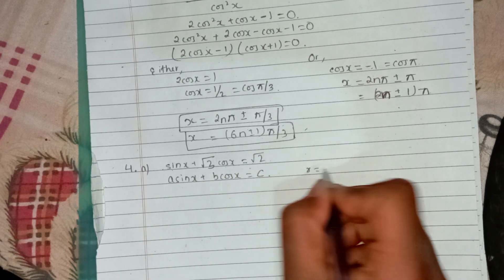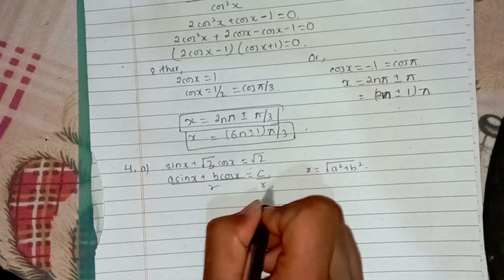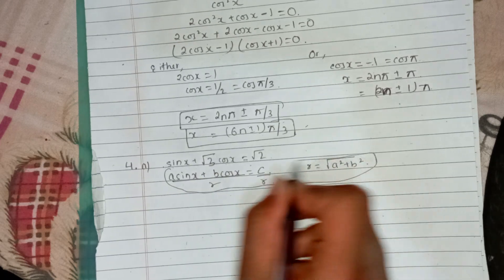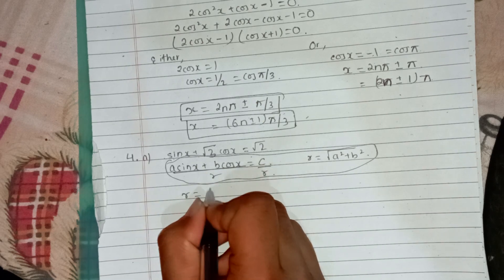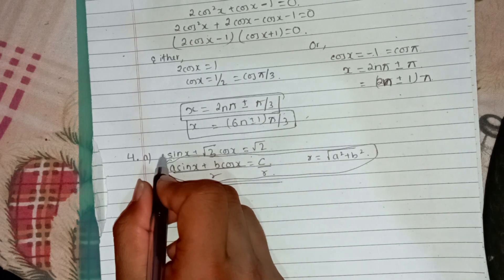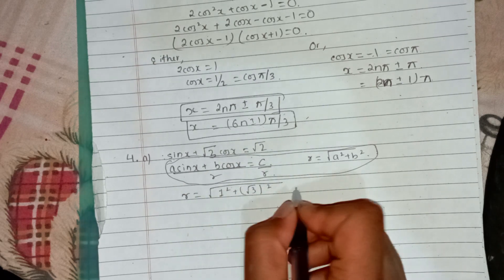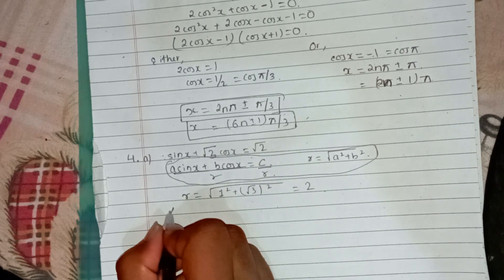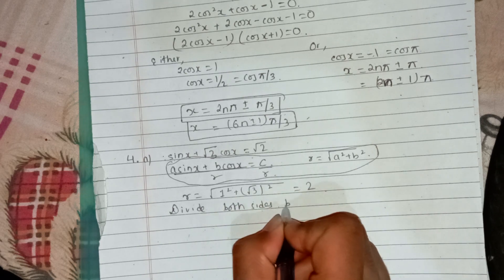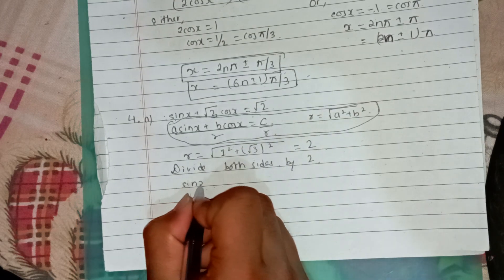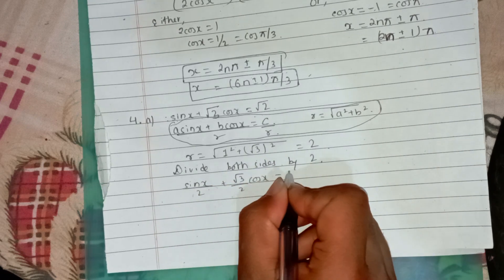We are going to take a look at the same equation. Here we get R equals a squared plus b squared, so R equals root 2. We divide both sides by 2, giving sin x by 2 plus root 3 by 2 cos x equals root 2.